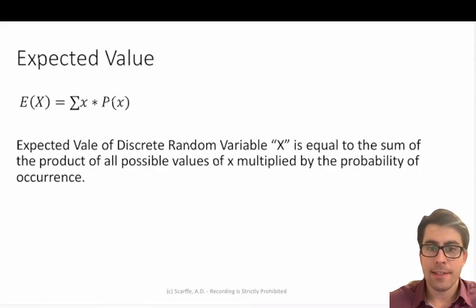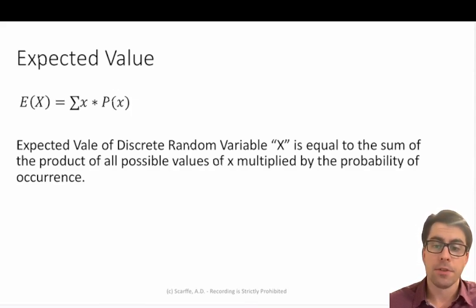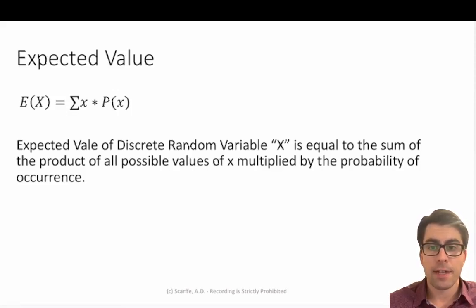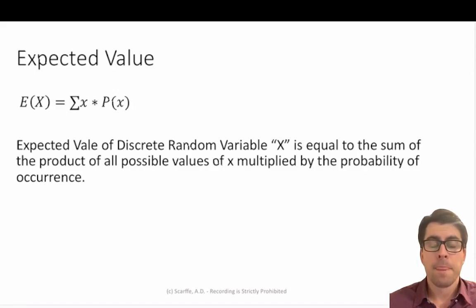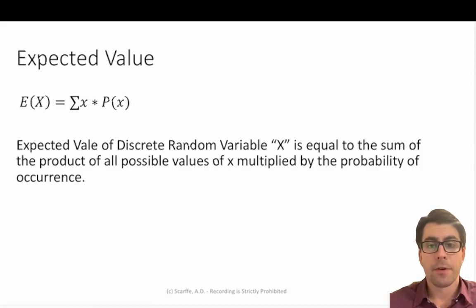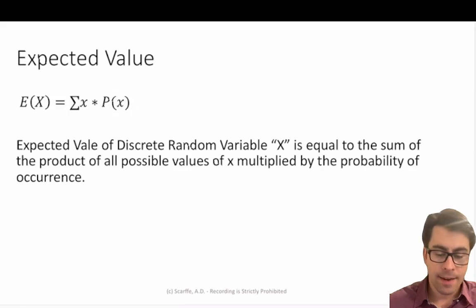There is a difference between your simple arithmetic average, which is what a lot of people are accustomed to doing — where you take the sum of all your observed values of X and divide by the total number — and what we're calculating here. Here we are calculating the sum of all possible values of X multiplied by their corresponding probabilities, acknowledging that each event of X may occur with a different probability.